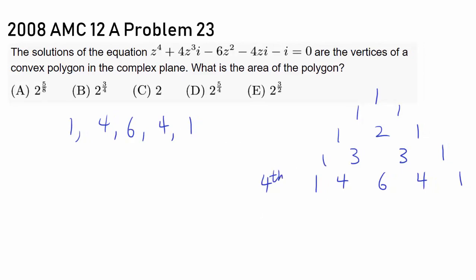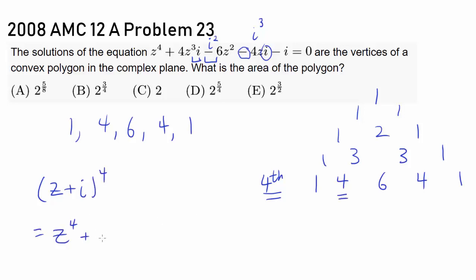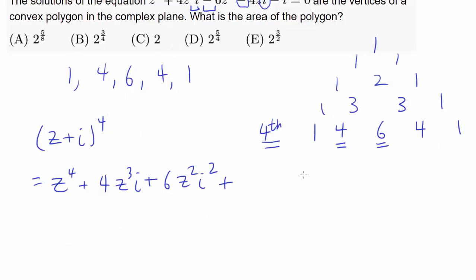Not only that, I see that we have i, then negative 1, then negative 1 times 6 — reminding me of i squared. And seeing negative i is reminding me of i cubed. So, since we have the fourth power with corresponding binomial coefficients and increasing powers of i with decreasing powers of z, it seems like we should relate our equation to (z + i) to the fourth, which is z to the fourth plus 4z cubed i plus 6z squared i squared plus 4z i cubed plus i to the fourth.